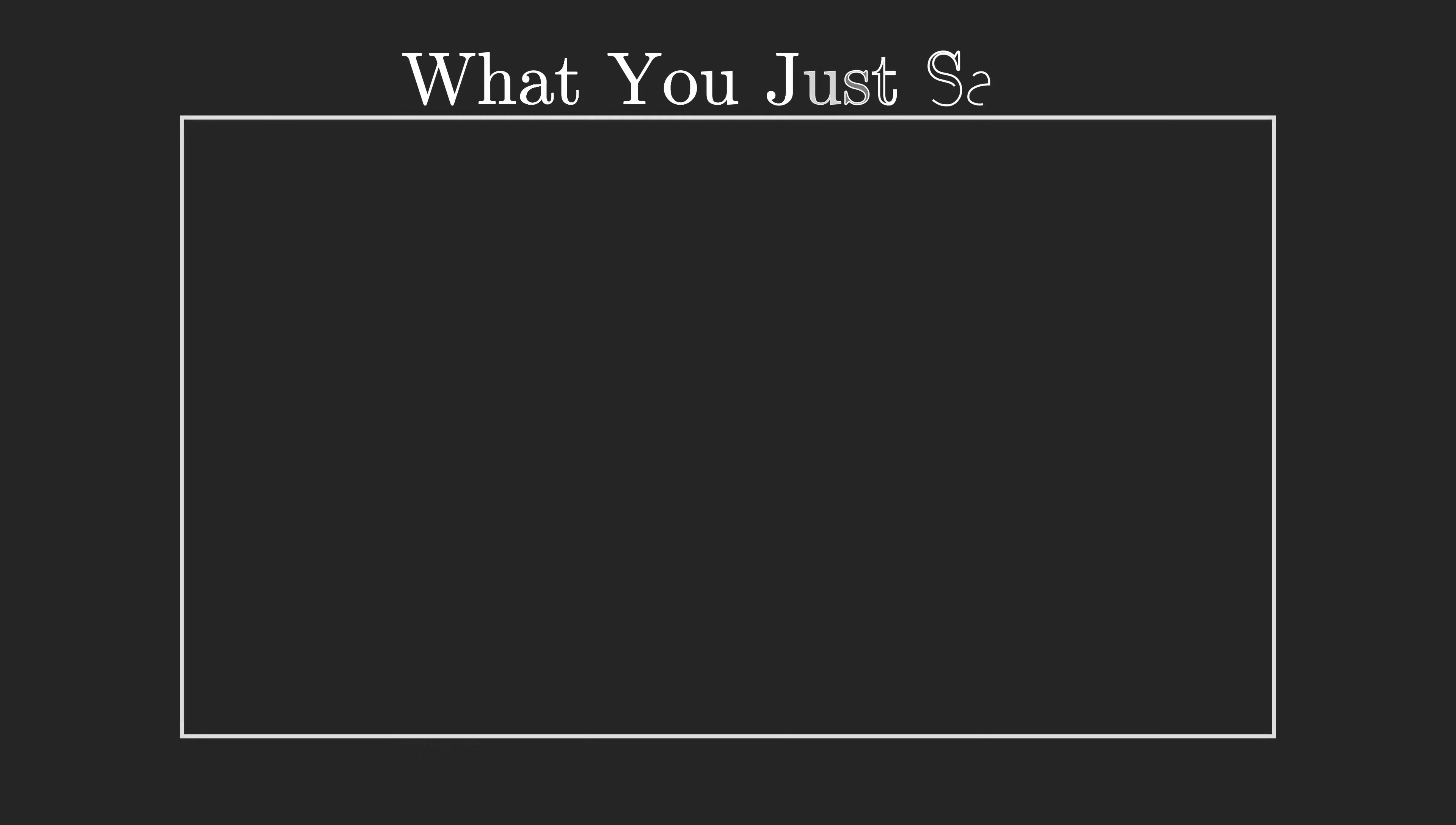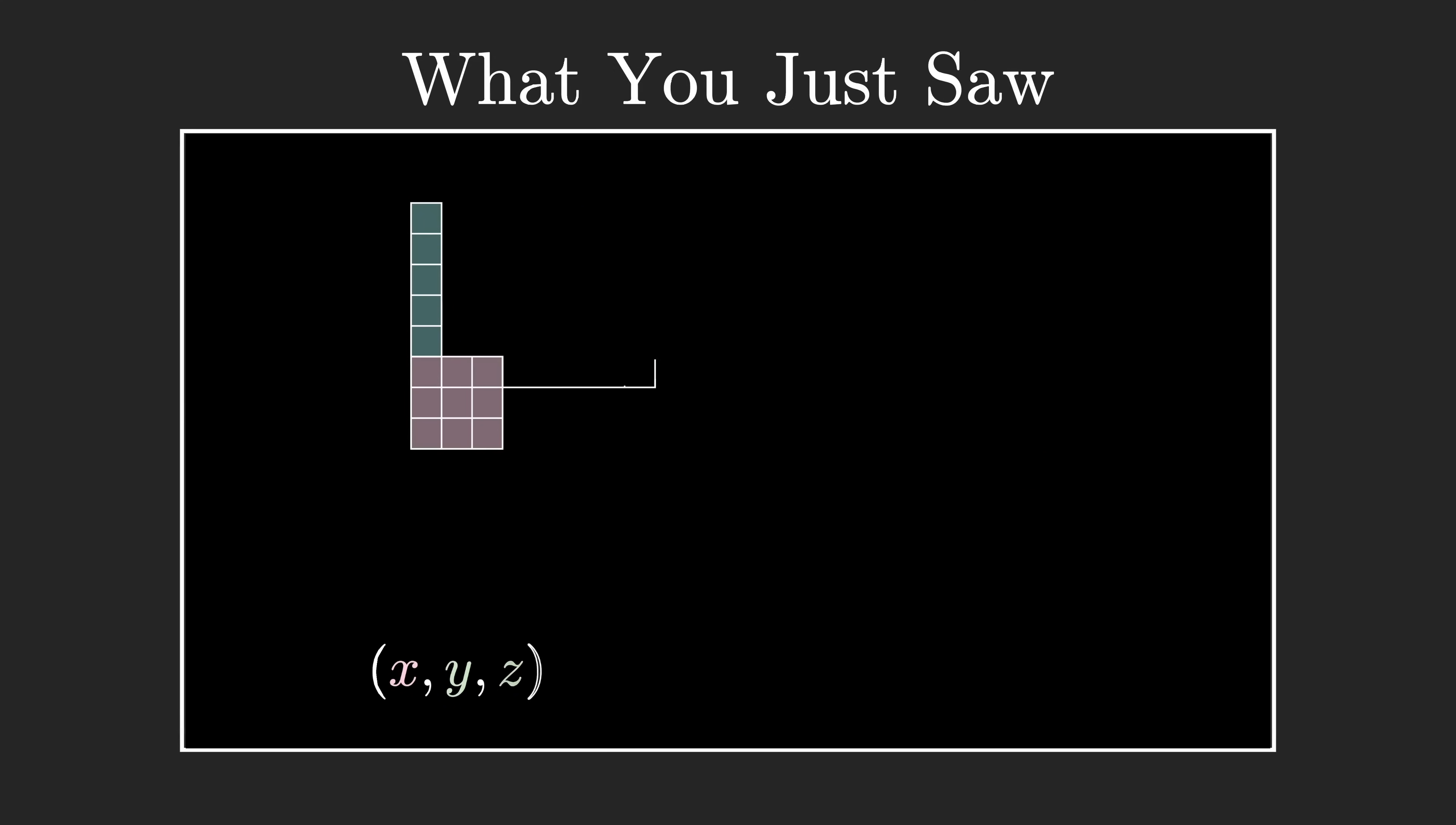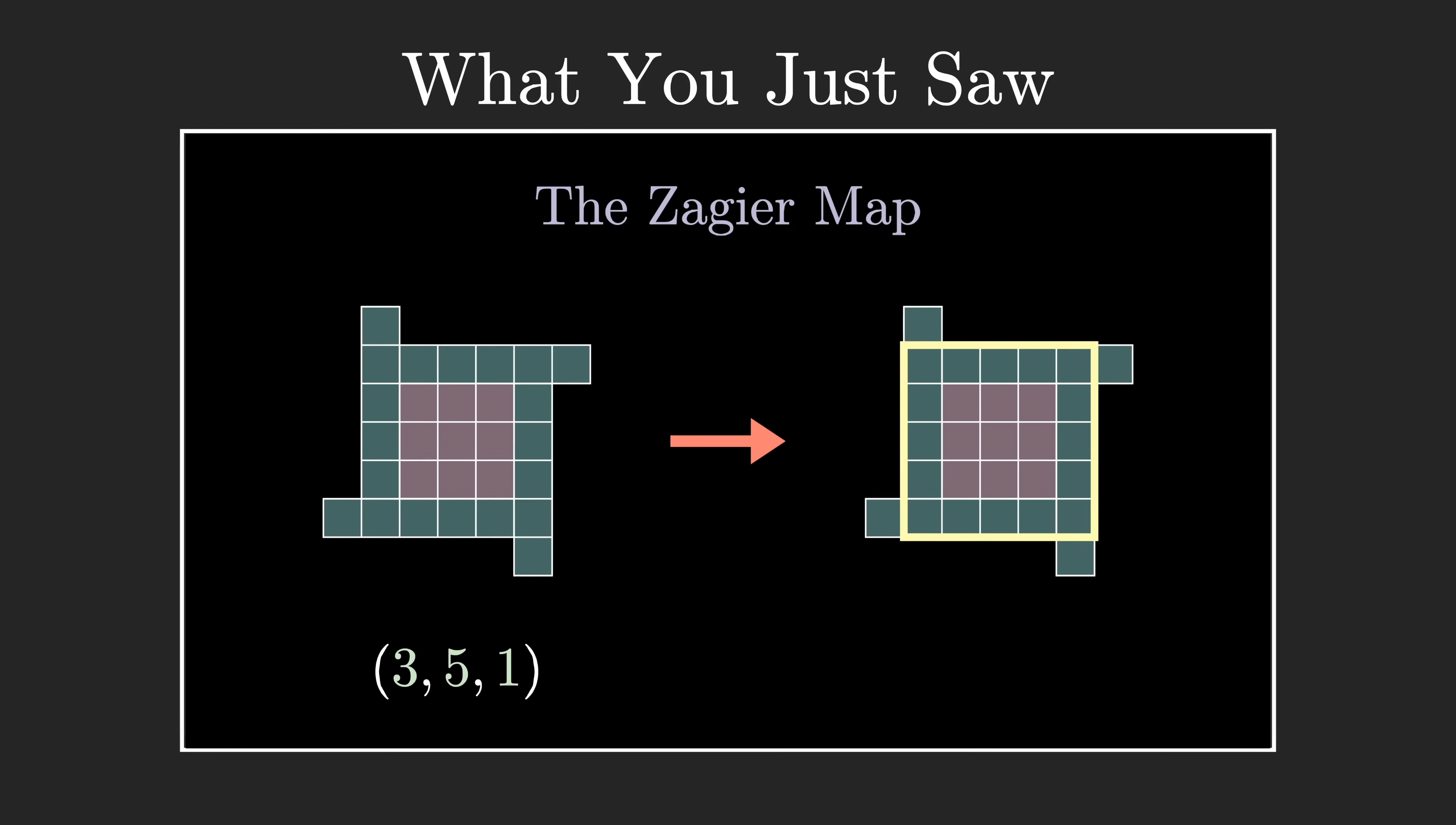G.H. Hardy once wrote that unfortunately there is no proof of Fermat's Two Squares Theorem within the comprehension of anybody but a fairly expert mathematician. If you managed to follow this, give yourself a pat on the back - you are a fairly expert mathematician. This proof was by no means easy to understand. There are so many moving parts, and don't feel ashamed to give it another pass through. Despite its difficulty, can't we all agree that this proof was beautiful? Who would have expected windmills of all things? Thanks for watching.